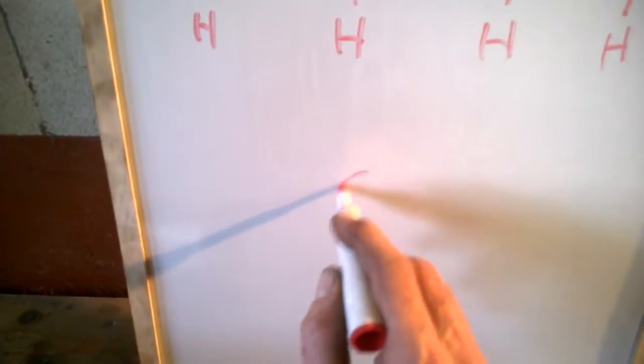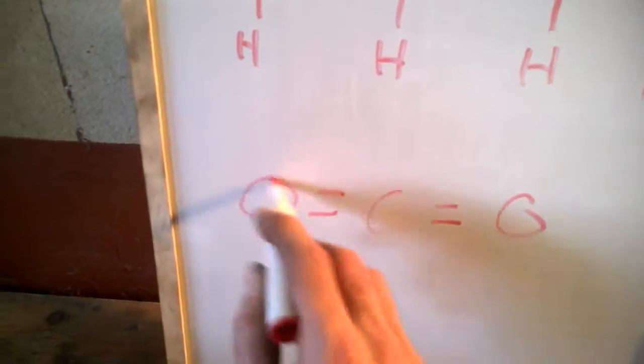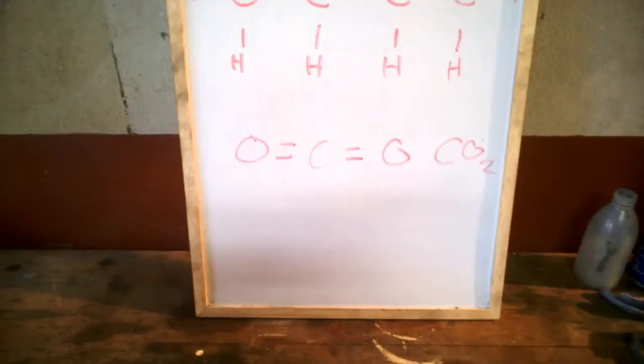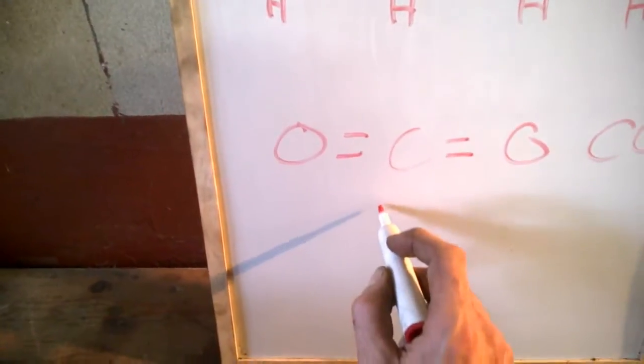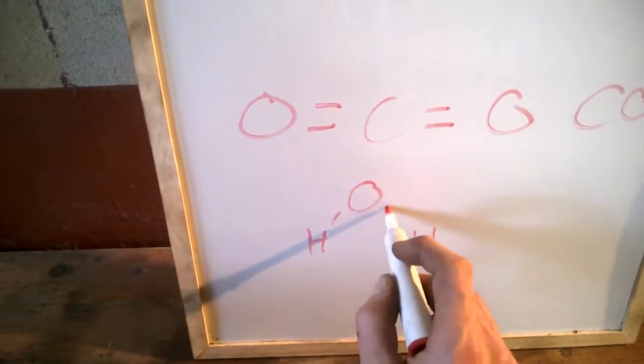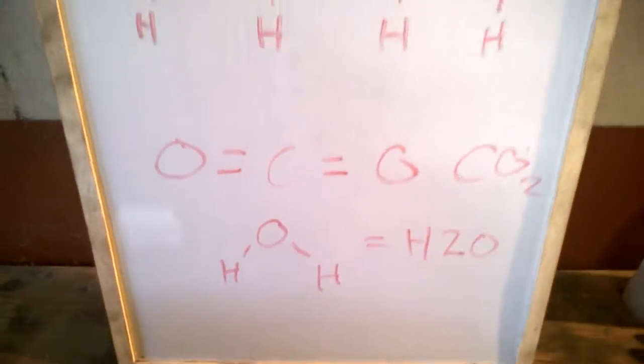So if you take a carbon and you join it to oxygens, you have carbon dioxide. It makes two bonds. And if you take the hydrogens off and you combine them with oxygen, you get water. H2O.